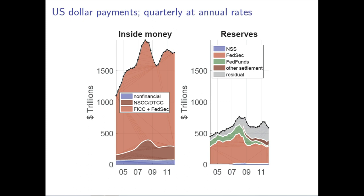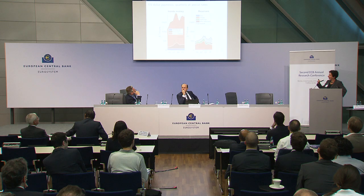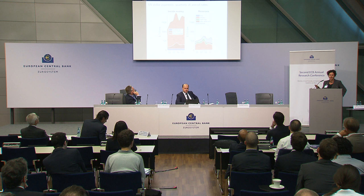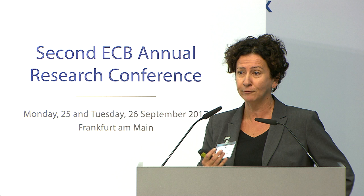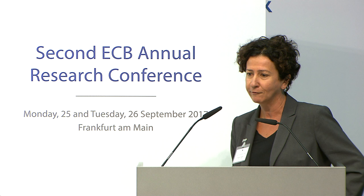The message I'd like you to take away from this picture is two things. First, payments occur in layers: there is the layer of bank customers using inside money to pay for goods and assets, and these payments are handled by banks at a bank layer where reserves are used as a medium of exchange. Second, even accounting for netting, payments for securities are important. These two features are absent from economic models of money as a medium of exchange — and so this is what this paper is about.